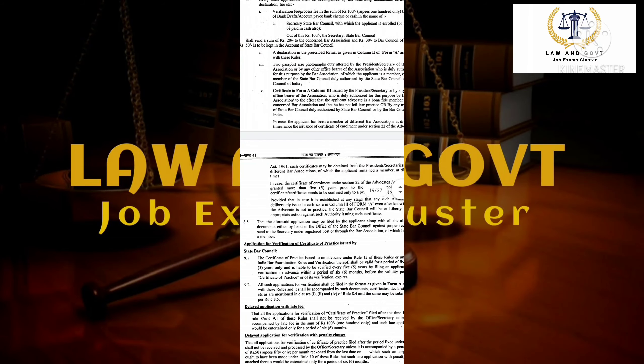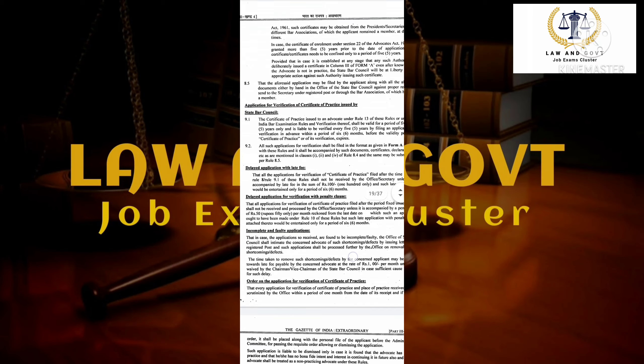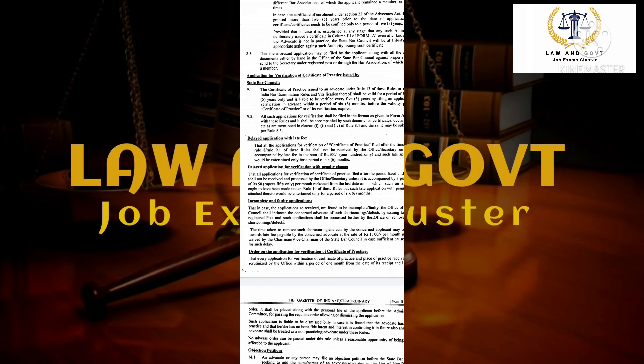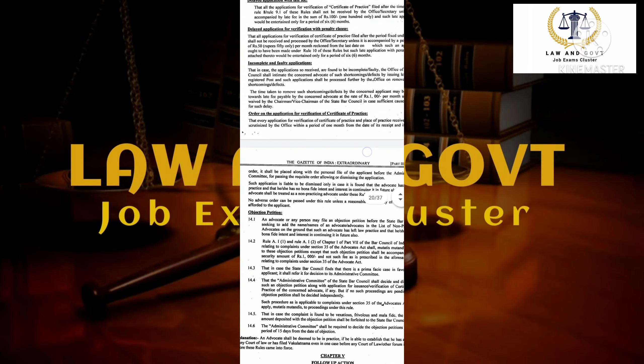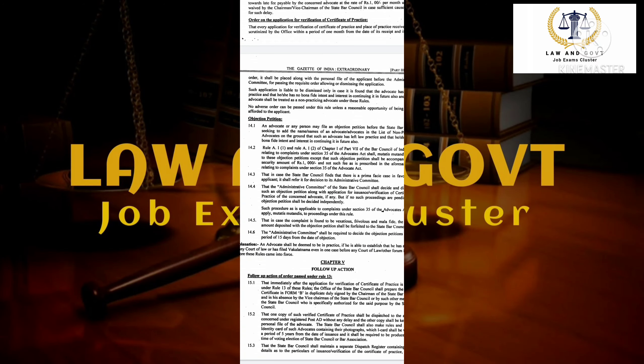Once you submit all these documents to the concerned State Bar Council, your verification will be done within six months. If there is any shortcoming within six months, it will be notified to you, which you have to clarify and clear. If you are not able to clear it, then you have to pay a penalty. Once your form is verified within six months, it will be sent to the approval committee of the concerned Bar Council, and then you will receive a certificate of practice. Normally, the entire process takes seven to eight months, as six months is taken for verification.